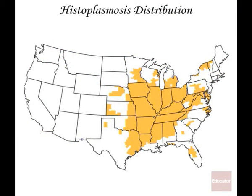Here is the geographic distribution of histoplasmosis. It's generally found in the middle part of the country — the south and the north, this whole Midwest or Mideast area. The disease surrounds river systems; this particular fungi likes to live around the Mississippi River, and the distribution is pretty much centered around the Mississippi.